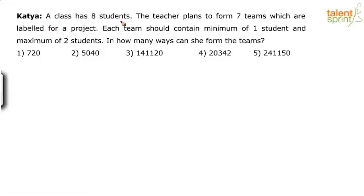A class has eight students. The teacher plans to form seven teams which are labeled for a project. Focus on the word 'labeled' — they're labeled for a project. Each team should contain a minimum of one student and a maximum of two students. In how many ways can she form the teams?